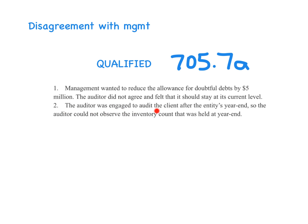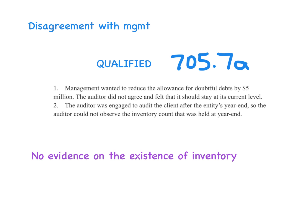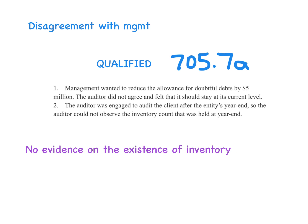Scenario 2: the auditor was engaged to audit the client after the year end and could not observe inventory. Here we have an issue where we could not gather evidence — no evidence on the existence of inventory. It's rare that we would take on a client after year end, but we have no evidence on existence. So certainly we have insufficient evidence, but I wouldn't say this was pervasive. This is just existence — we could still calculate valuation, completeness, rights and obligations.